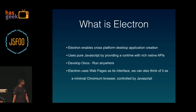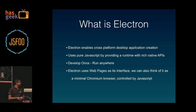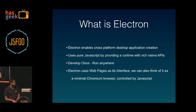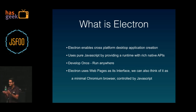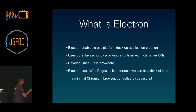So what is Electron? Looking from a bird's eye view, Electron gives you a framework for creating cross-platform desktop applications using web technologies — basically using JavaScript. It uses JavaScript to provide a runtime environment where you can use a rich API for your lower-level OS. The biggest advantage is you create your application once and you can run it on any OS platform you wish. You can actually think of it as a minimal Chromium browser controlled by JavaScript.